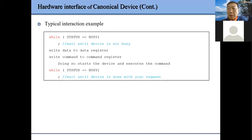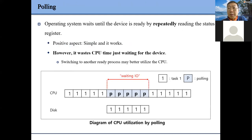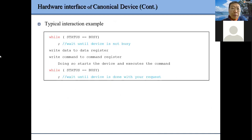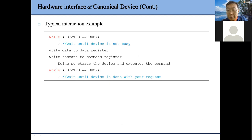We also talked about two mechanics to interact with an IO device. The first approach is polling — after we issue IO commands, we use a loop to check the status of that particular IO operation. If the operation has finished, then we can do something else.